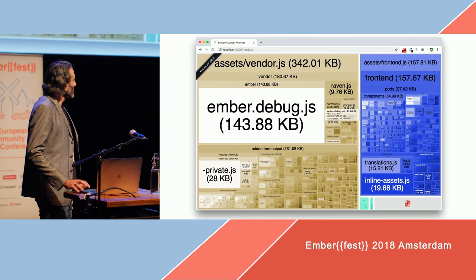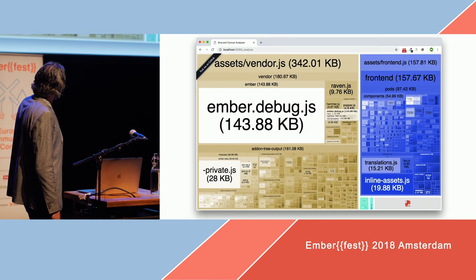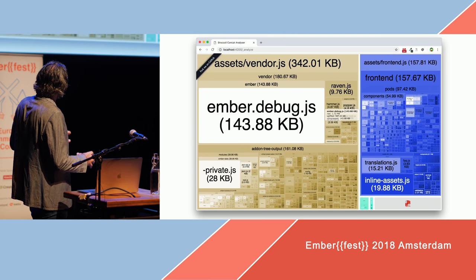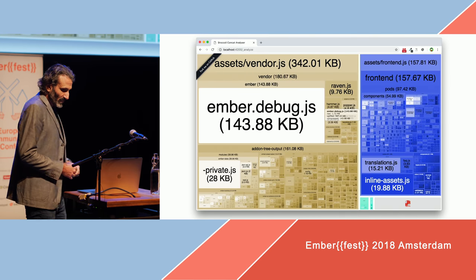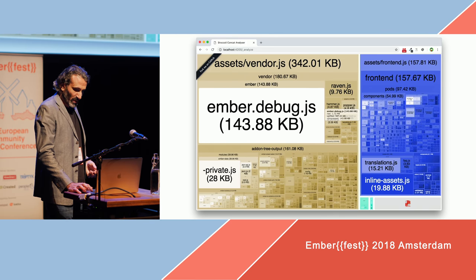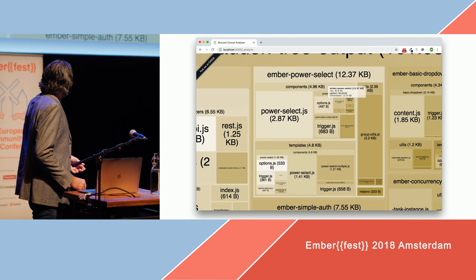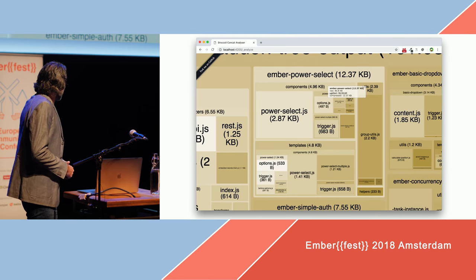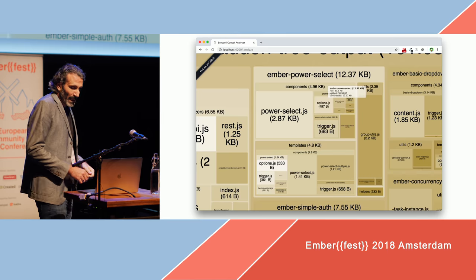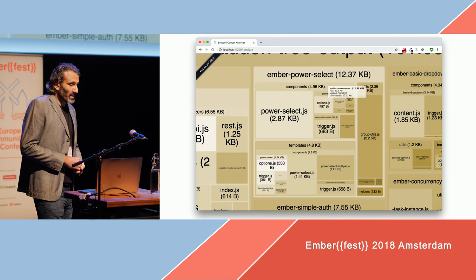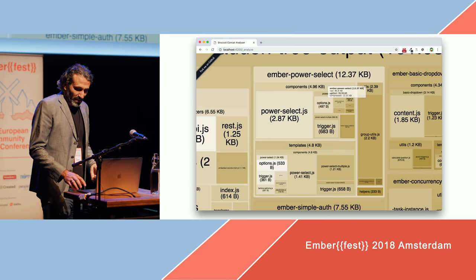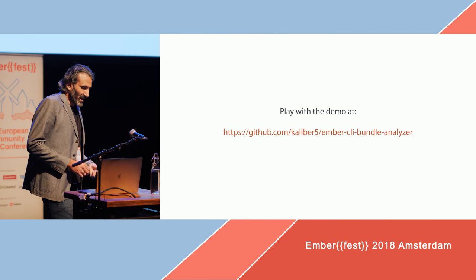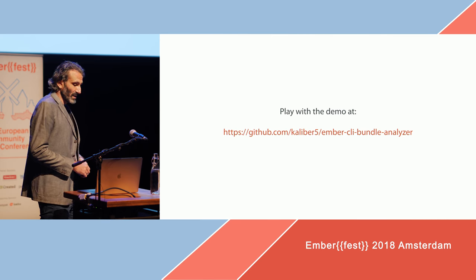What this gives you is a visualization: the big brownish area is your vendor.js file with its size, and on the right the blue one is your app.js. All these little blocks are the modules and packages contained in that big bundle. You can click on one and zoom in on that area. For example, using the popular Ember Power Select add-on, you can see its size after minification and compression, and even all its individual modules like components and templates. It also works with live reload, so it's much easier to consume in an Ember setup.